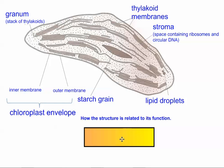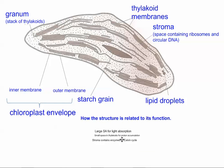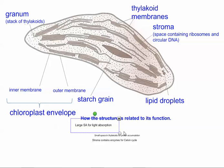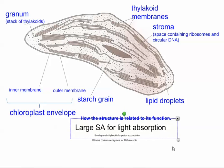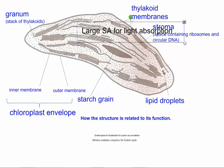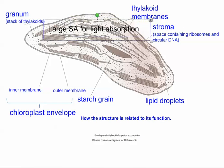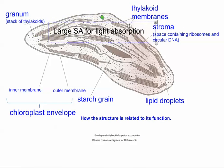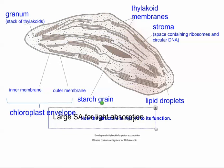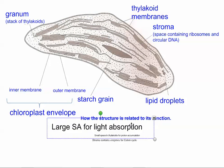So how is the structure related to the function? The thylakoid membranes — there are a lot of them, and the large surface area means more light can be absorbed. That's where the chlorophyll is actually embedded, inside the thylakoid membranes, so large surface area helps with that.